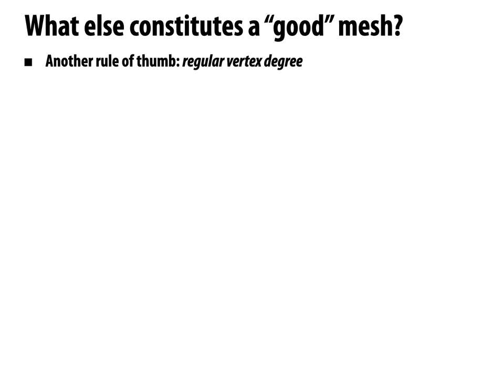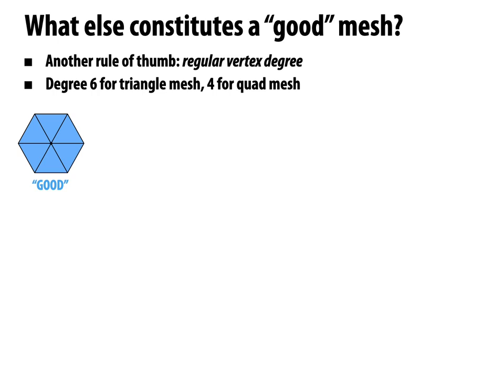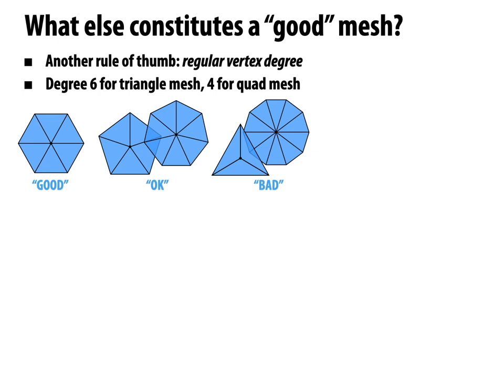Another rule of thumb is having regular vertex degree. The degree of a vertex is the number of edges touching it. For a triangle mesh, regular means all vertices are degree 6 — as in a plane tiled by equilateral triangles. For a quad mesh, regular means degree 4. Meshes with vertices deviating only slightly from 6 are pretty good. Meshes with really high or really low degree vertices start to get worse.